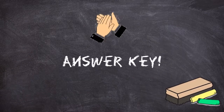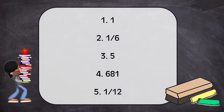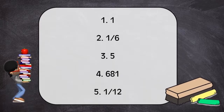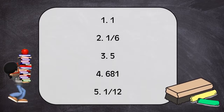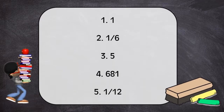Congratulations! The following are the answers to the previous assessment. Number 1, the limit of the function is equal to 1. Number 2, the limit of the function is equal to 1 over 6. Number 3, the limit of the function is equal to 5. Number 4, the limit of the function is equal to 681. Number 5, the limit of the function is equal to 1 over 12. I hope this video helped you in applying the limit laws in solving the limits of rational, radical, and polynomial functions.